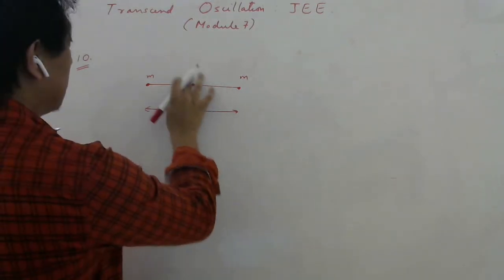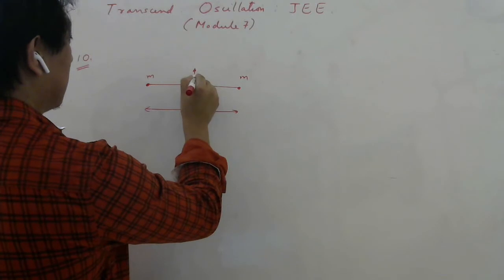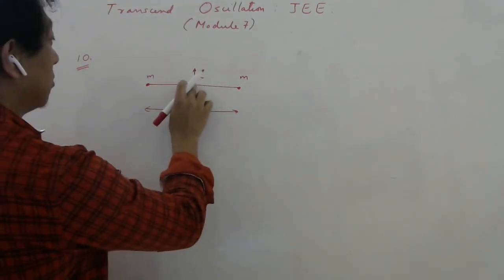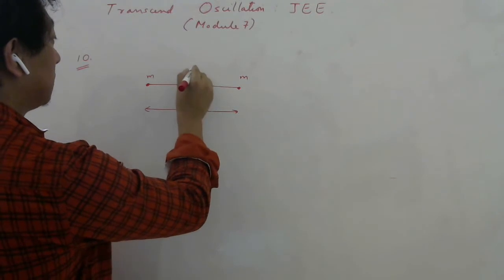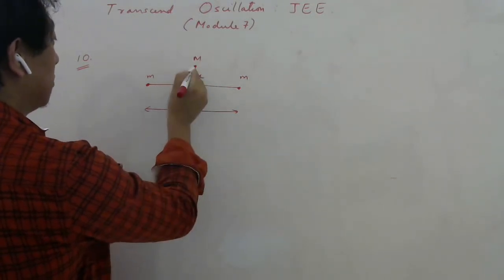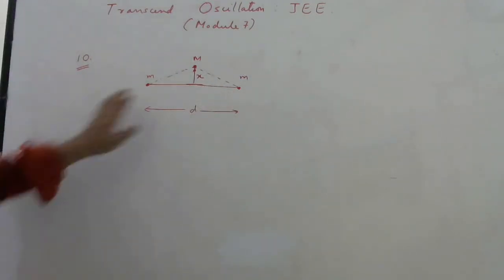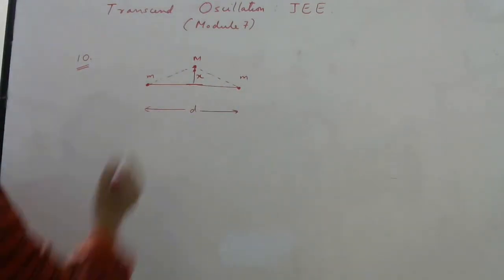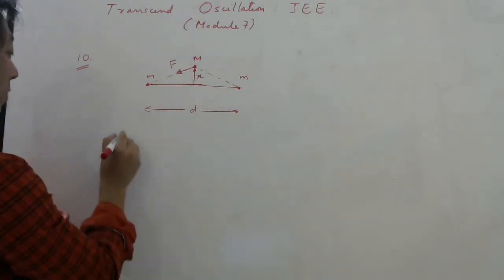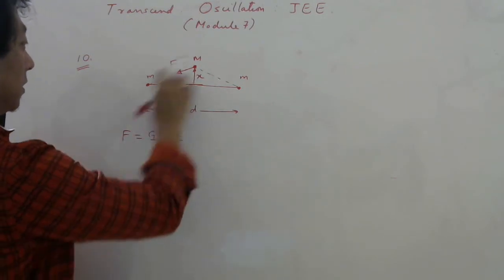The question is: if you displace capital M slightly upward, let the displacement be x. So now capital M is no longer at the center — it is displaced. The force on M will be along the line joining the particles. These two masses are fixed. So there will be a force F along the line joining each fixed mass to M.